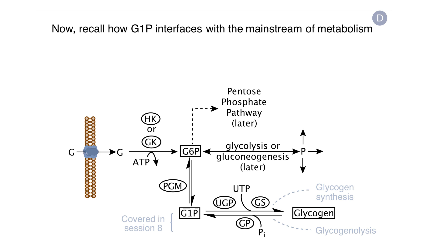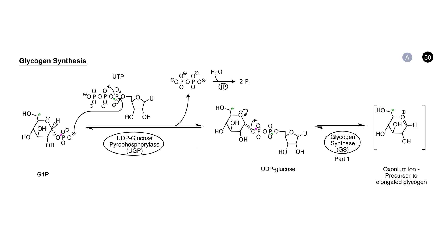Let's imagine a scenario in which we eat a meal. Glucose appears in the blood and is taken into the cell. The enzymes hexokinase or glucokinase will phosphorylate the glucose into glucose 6-phosphate. If the glucose is not needed for glycolysis or the other pathways mentioned, phosphoglucomutase will convert the glucose 6-phosphate to glucose 1-phosphate, and then in the pathway of glycogen synthesis, glucose 1-phosphate will be polymerized into glycogen for energy storage. At this point, let's turn to Storyboard 30 and look at panel A.